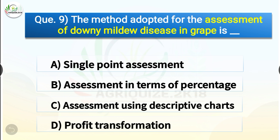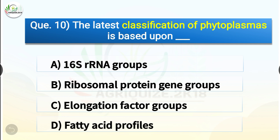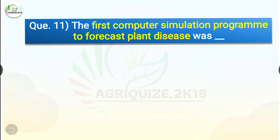Question number nine: The method adopted for the assessment of downy mildew disease in grape is dash. The options are single point assessment, assessment in terms of percentage, assessment using descriptive charts, or probit transformation. The correct answer is option C, assessment using descriptive charts. Question number ten: The latest classification of phytoplasmas is based upon the options are 16S rRNA groups, ribosomal protein gene groups, elongation factor groups, or fatty acid profiles. The correct answer is option A, 16S rRNA groups.